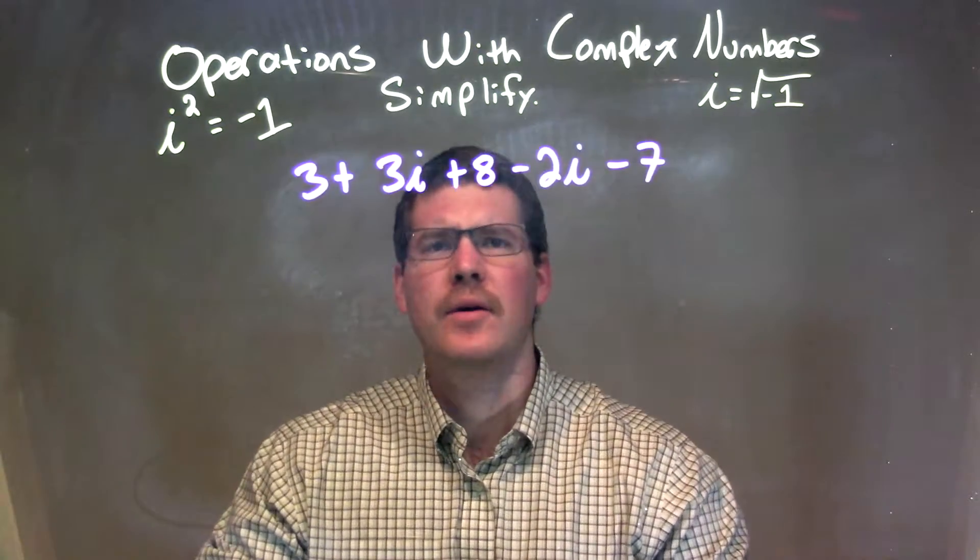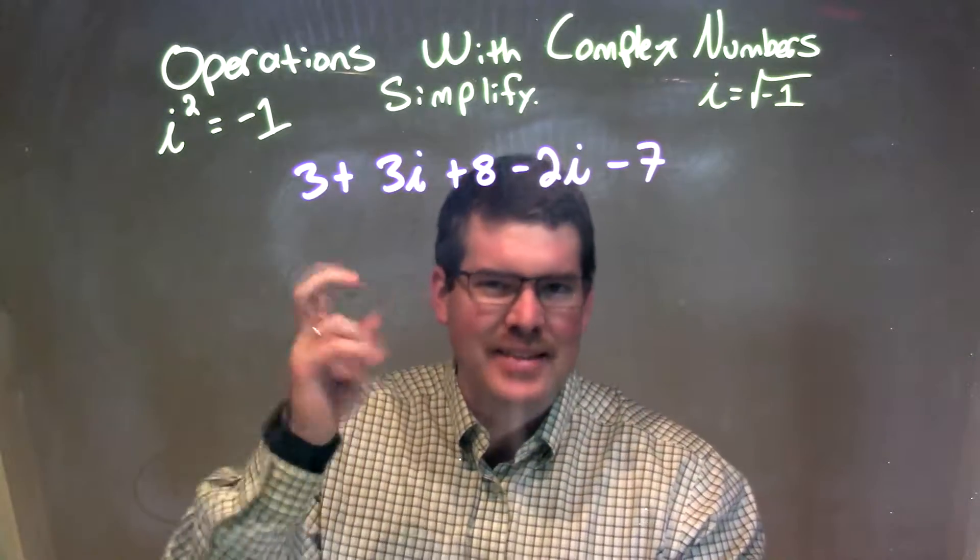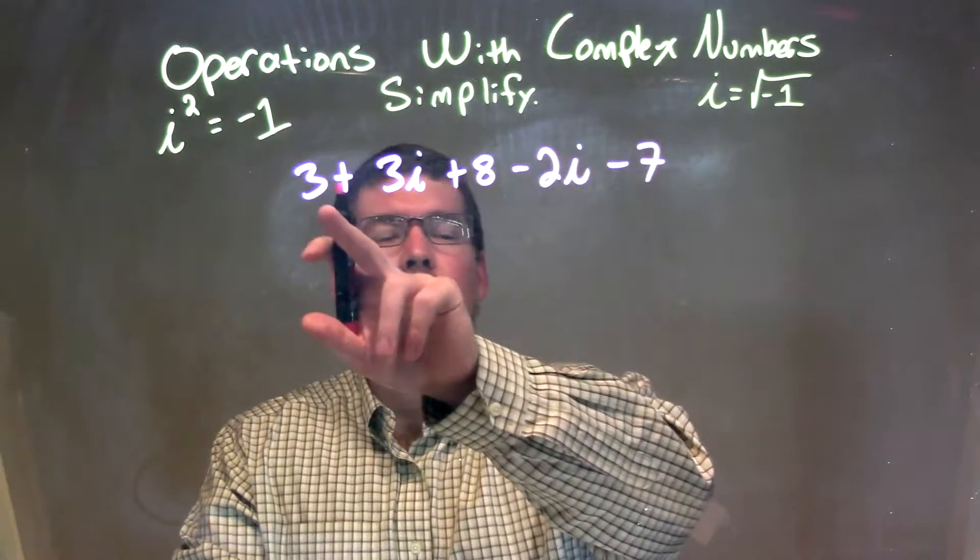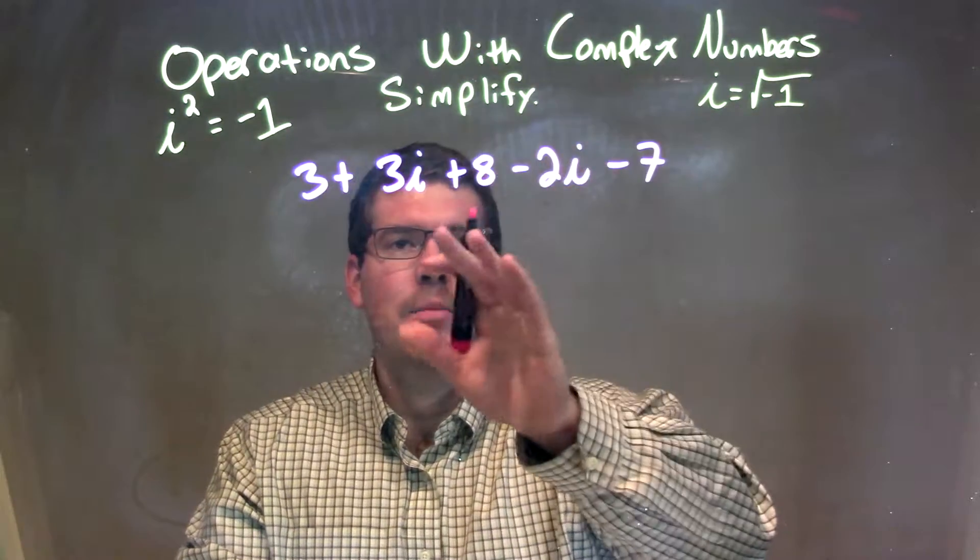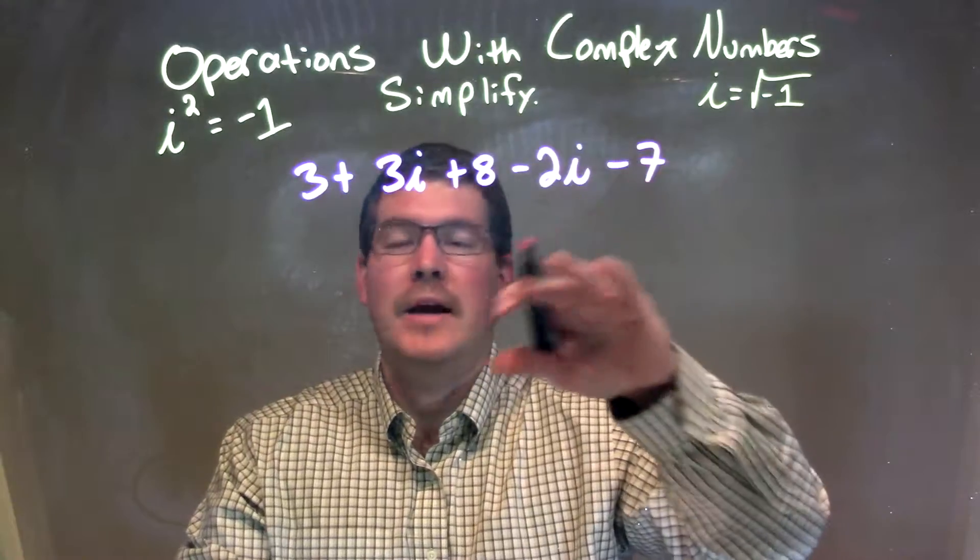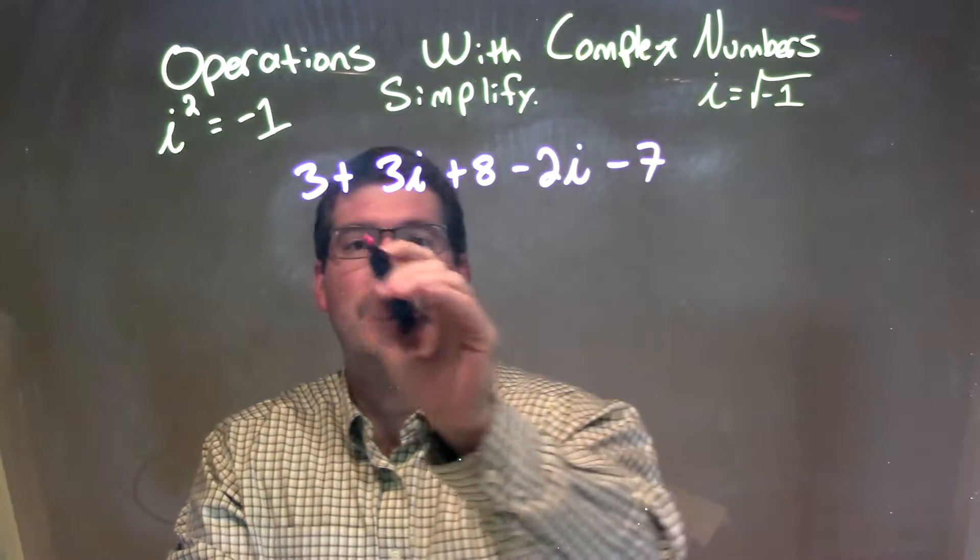Well, what I want to do now is combine my like numbers. So I'm looking at the 3 and the 8. Let's actually rearrange all of our like numbers next to each other.